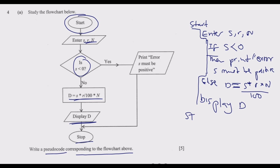Then we DISPLAY d, then we close the code with STOP. What is key here is notice the spacing — these are on the same line. We do the first tab indent, and the IF and ELSE should align with ENTER. These spacings are very critical when doing pseudocode. Once you do that correctly, you get the 5 marks.